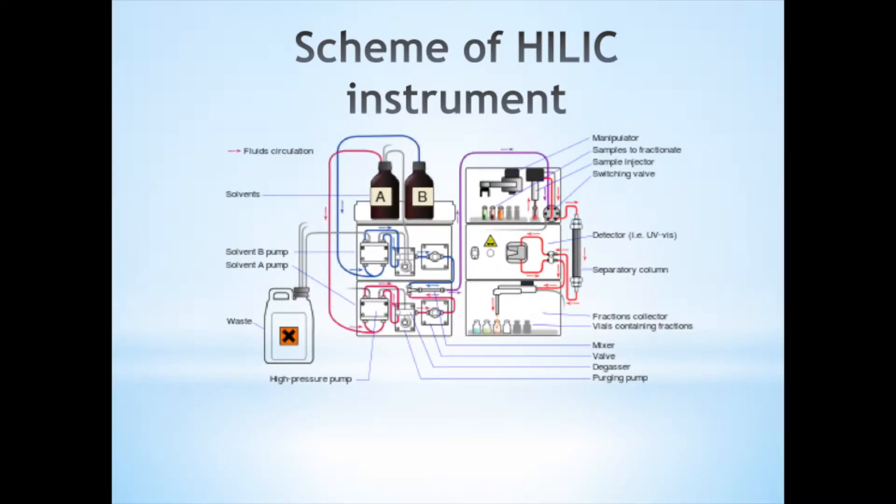HILIC is based on the HPLC instrument, but uses a hydrophilic column, which allows us to separate, identify, and quantify a mixture of compounds. The components of a basic high-performance liquid chromatography system are shown in the simple diagram above. A high-pressure pump is used to generate and meter a specified flow rate of mobile phase, typically milliliters per minute. An injector is able to introduce the sample into the continuously flowing mobile phase stream that carries the sample into the HILIC column.